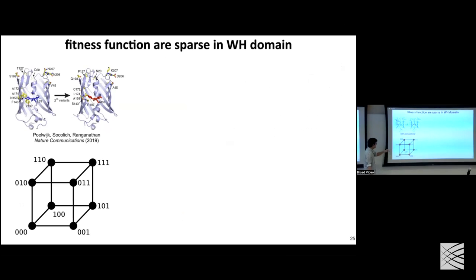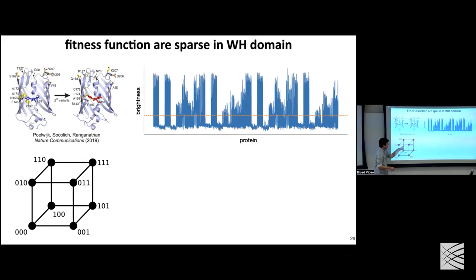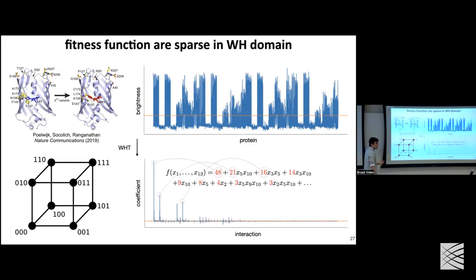The key insight comes from a paper by the Ranganathan lab, now at UChicago, published in Nature Communications. They looked at two variants of a fluorescent protein — one fluorescing blue, one fluorescing red — differing at exactly 13 locations. They created all 2^13 proteins connecting these two variants, experimentally tested them, and measured a brightness metric. The x-axis shows all sorted proteins, and the y-axis shows brightness.